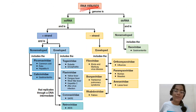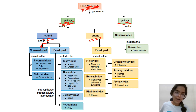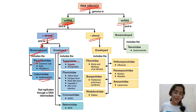RNA viruses can be single-stranded or double-stranded. Single-stranded RNA can be positive sense or negative sense. Positive sense non-enveloped: Picornaviridae — causes common cold, polio, and hepatitis A — and Caliciviridae — causes gastroenteritis. Positive sense enveloped: Togaviridae — rubella and encephalitis — Flaviviridae — yellow fever, dengue fever, West Nile fever, hepatitis C, Zika virus — Coronaviridae — SARS — and Retroviridae — AIDS.